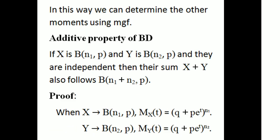Next we are going to discuss the additive property of the binomial distribution. If X follows B(n₁, p) and Y follows B(n₂, p), and they are independent, then the sum X plus Y follows B(n₁ plus n₂, p).